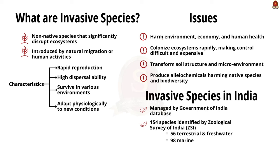Invasive species enter an existing ecosystem through natural migration or may be introduced by the activities of other species. Common characteristics include: rapid reproduction, high dispersal ability, ability to survive in a wide range of environmental conditions, and ability to adapt physiologically to new conditions. The major issue is that they can harm the environment, economy, or human health — they grow at a faster rate, become difficult to control, and produce allelochemicals which cause destruction of native species and local biodiversity.